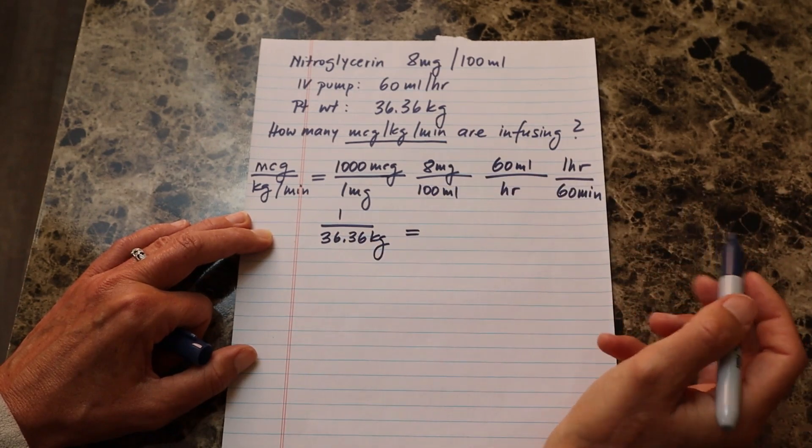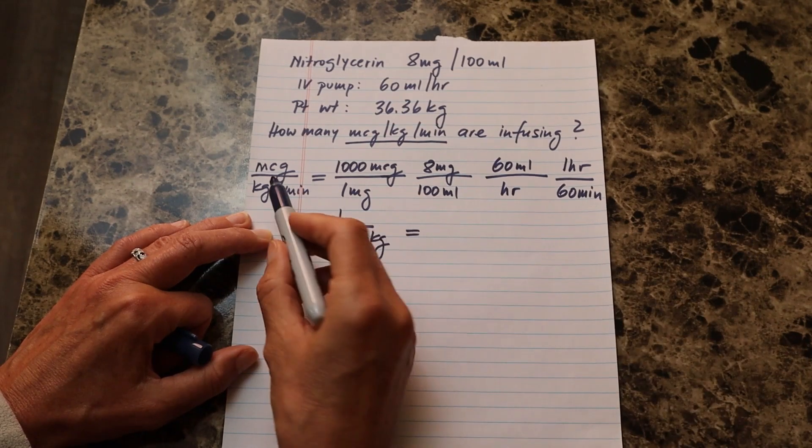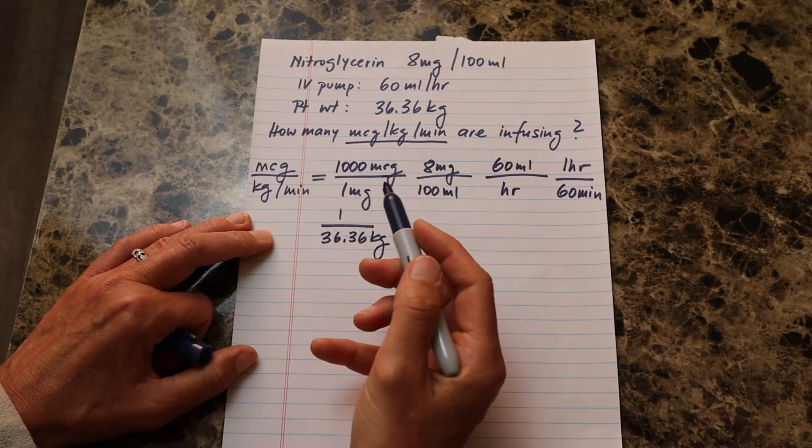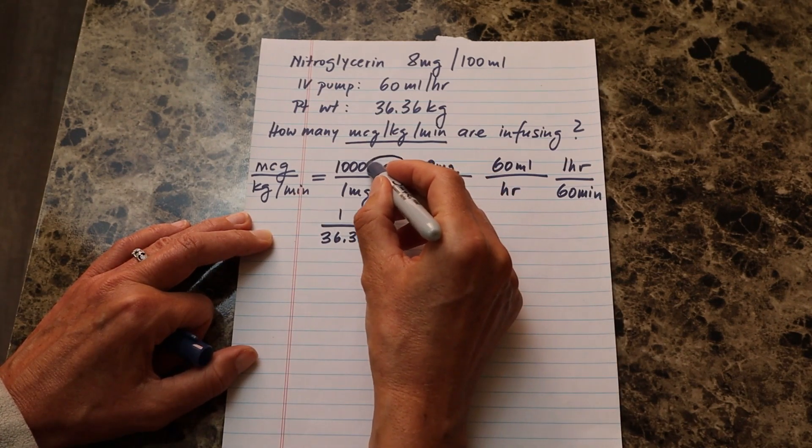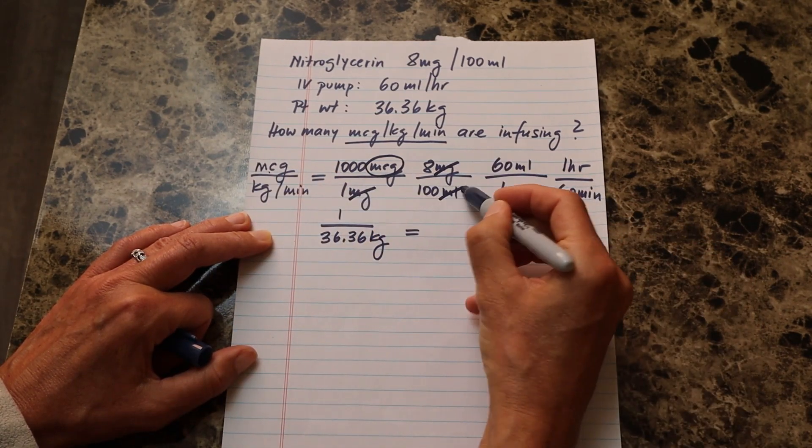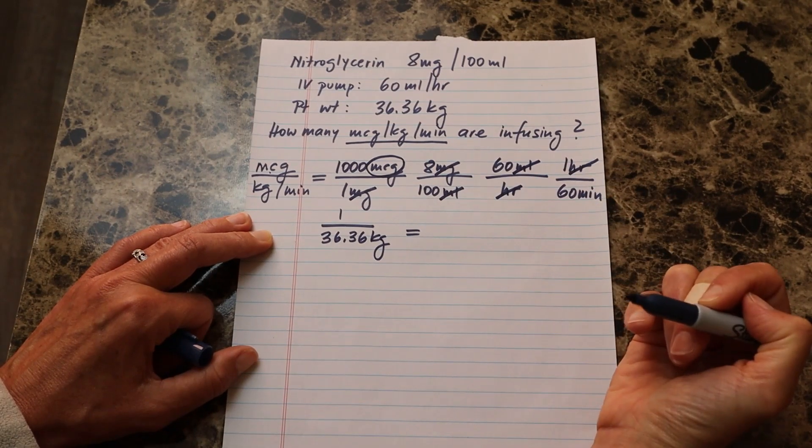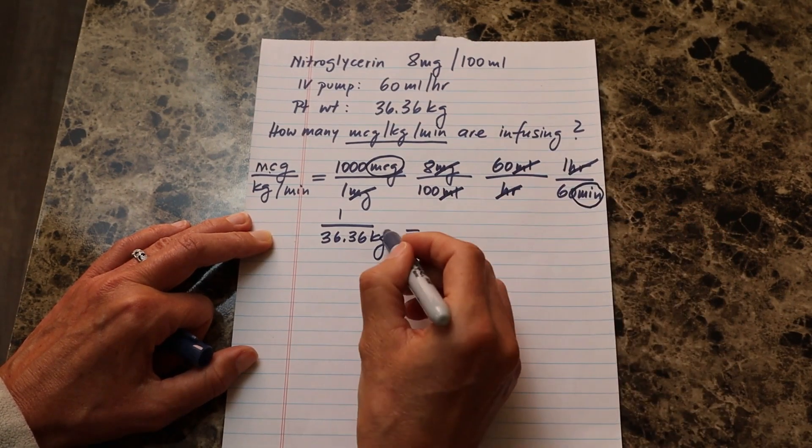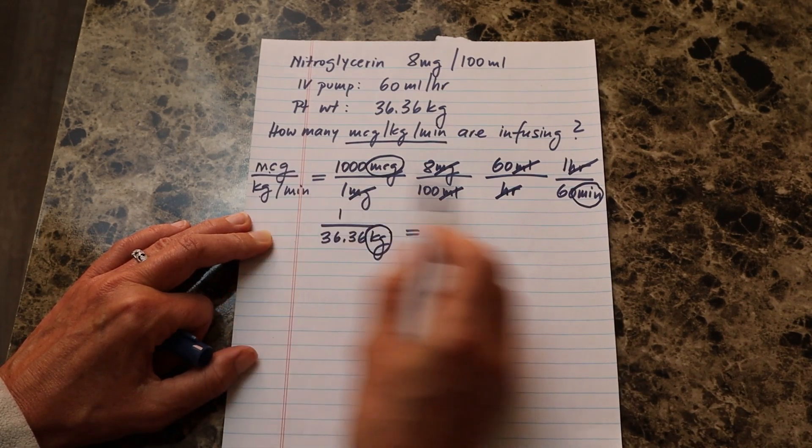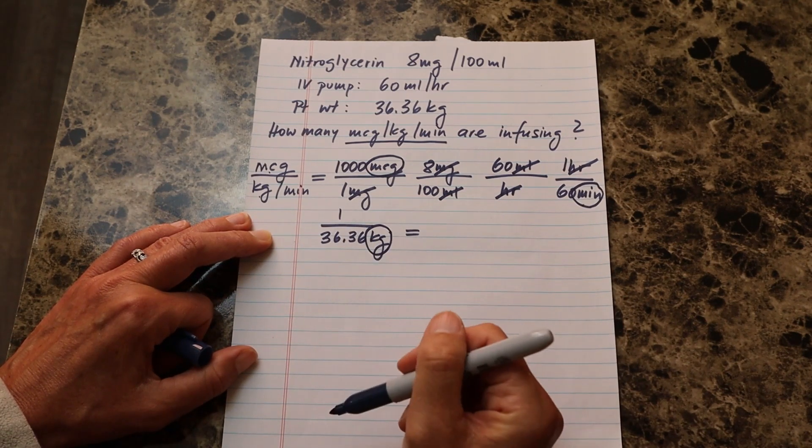So this should all be in one line. I just ran out of space here. So now I'm going to cross cancel my units to see if it is truly micrograms per kilo per minute that I'm going to come up with. So I'm going to keep my micrograms here because that's what I'm looking for. Milligrams and milligrams cancel out. Milliliters and milliliters cancel out. Hours and hours cancel out. What I'm left with is the minutes and the kilograms on the bottom. So micrograms in the numerator and kilograms and minutes on the bottom. So now all I have to do is do my math.